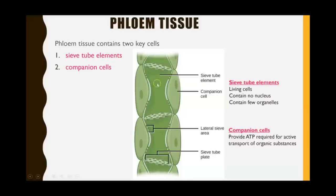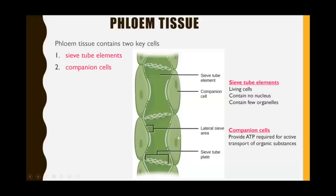In this diagram we can see in the middle are the sieve tube elements — these cells all lined up together — and on either side we have the companion cells. The end walls of sieve tube elements are perforated, with holes in the ends, so we can have a continuous flow of the sugar solution. They are living cells but they don't contain a nucleus and have very few organelles, much like the xylem, to ensure maximum flow of the sugary solution. Translocation does require active transport, so the companion cells provide the ATP required for that process.